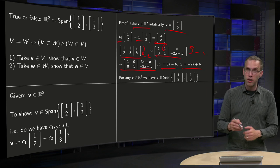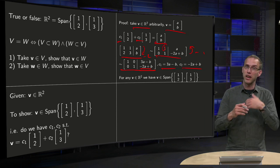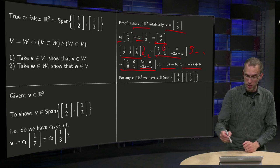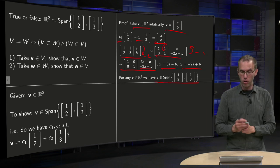So this means whichever v in R² you take, you can always write it as a linear combination of [1,2] and [1,3], which means that this vector is always in the span of [1,2] and [1,3].